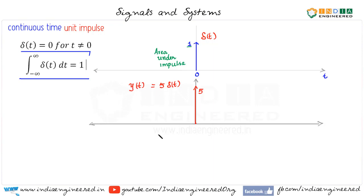So this means y(t) is equal to 0 for t not equal to 0, and integral minus infinity to infinity y(t) dt has to be 5 here. So this is how an impulse and a scaled impulse will look like. Now let's go ahead and see some of the very important properties of impulse functions.